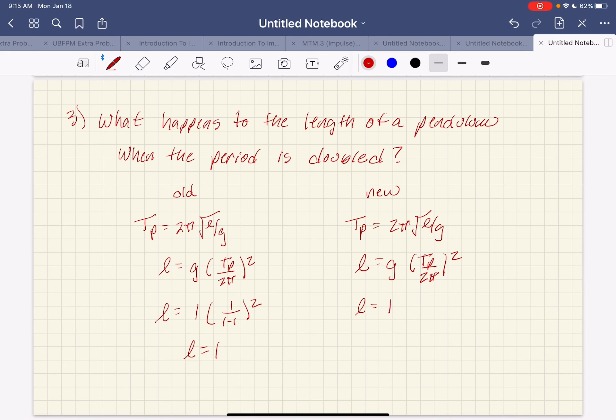And my new length, little g doesn't change. My period doubles. 2 stays the same. Pi stays the same. So, my length is 4 times the original amount. That's the Mulvey method.